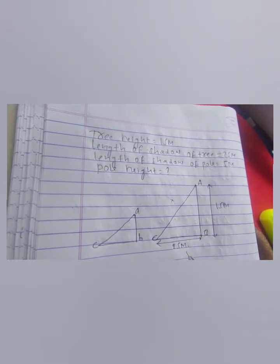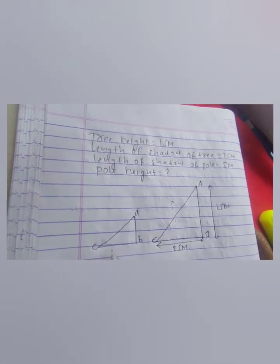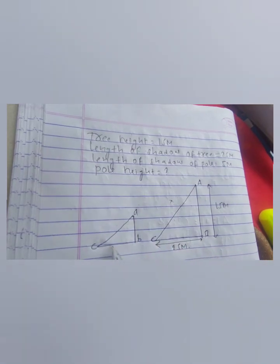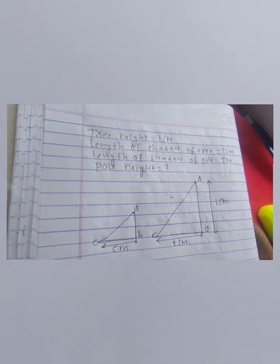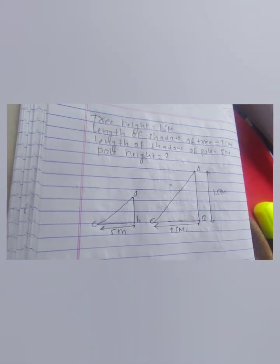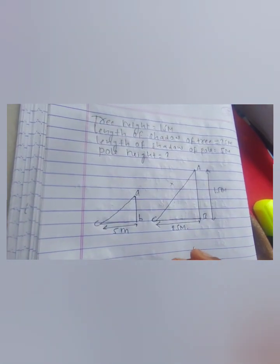...or length of shadow of pole in the base. So CB (the length of shadow of tree) becomes 25 meters and length of shadow of pole is 5 meters. You must not keep the shadow length in the hypotenuse.